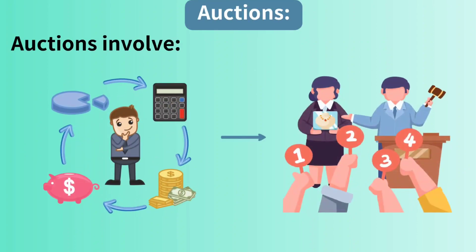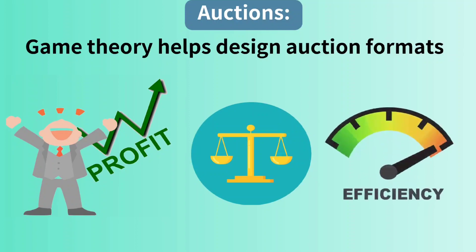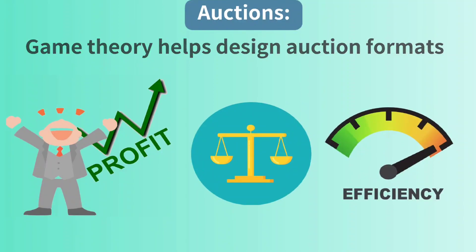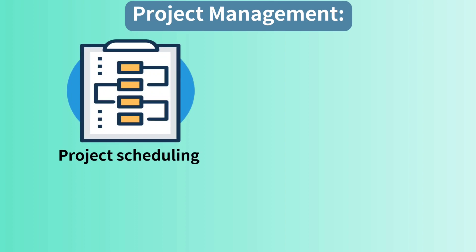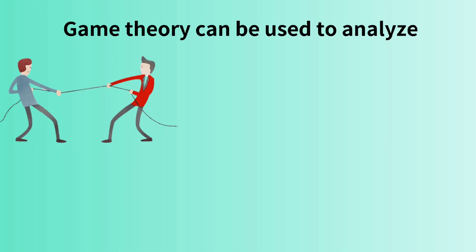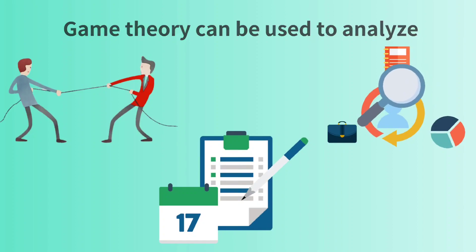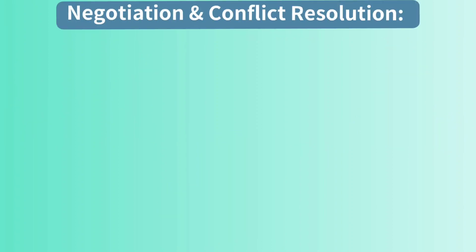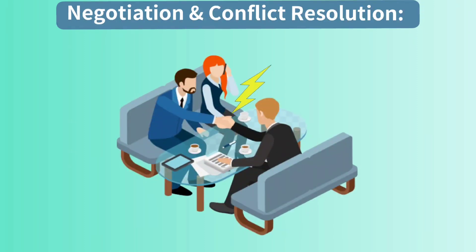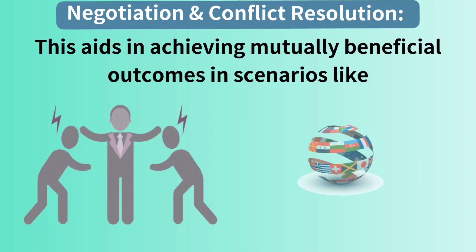Auctions: auctions involve strategic decision-making by bidders. Game theory helps design auction formats that maximize revenue for the seller while ensuring fairness and efficiency. Project management: in project scheduling and resource allocation, game theory can be used to analyze conflicts of interest among project teams, helping to optimize resource allocation and task scheduling. Negotiation and conflict resolution: game theory can be applied to model negotiations between parties with conflicting interests, aiding in achieving mutually beneficial outcomes in scenarios like labor disputes or international diplomacy.